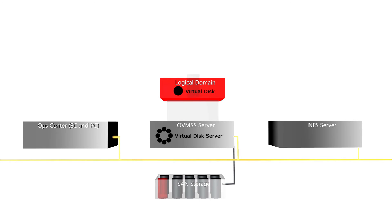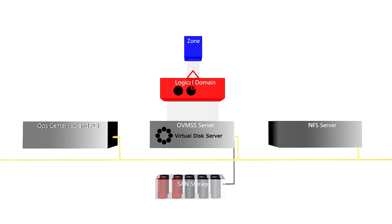When you create a zone within a logical domain and want to use a LUN, you first need to add storage to the logical domain. The add storage action allows you to select a LUN and then creates a virtual disk on the logical domain. When you provision the zone, you select that LUN and Ops Center provides the zone indirect access to the LUN.